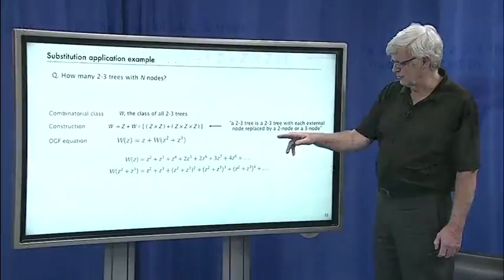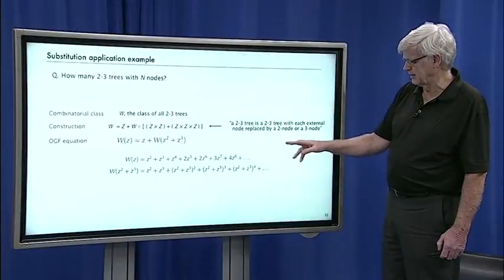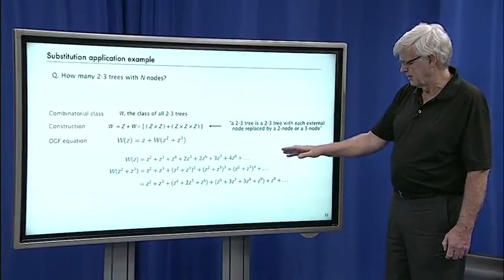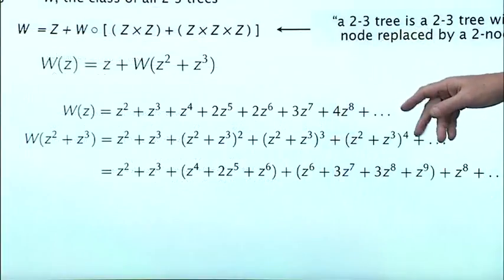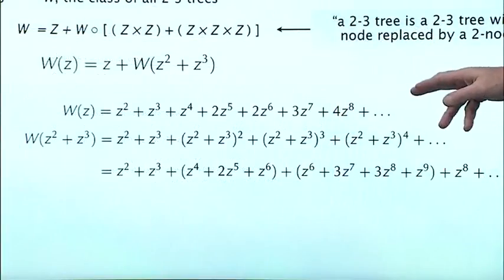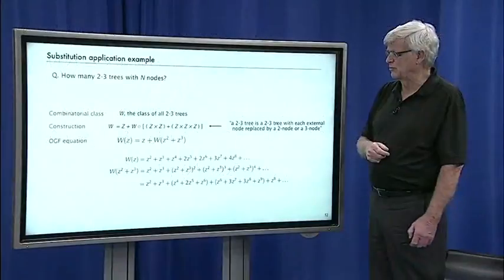If you just plug in z squared plus z cubed and collect terms, then you'll see that you get one, two, one, three, one, four, two fives, two sixes, three sevens and so forth. So that's an interesting OGF equation that we get from substitution.